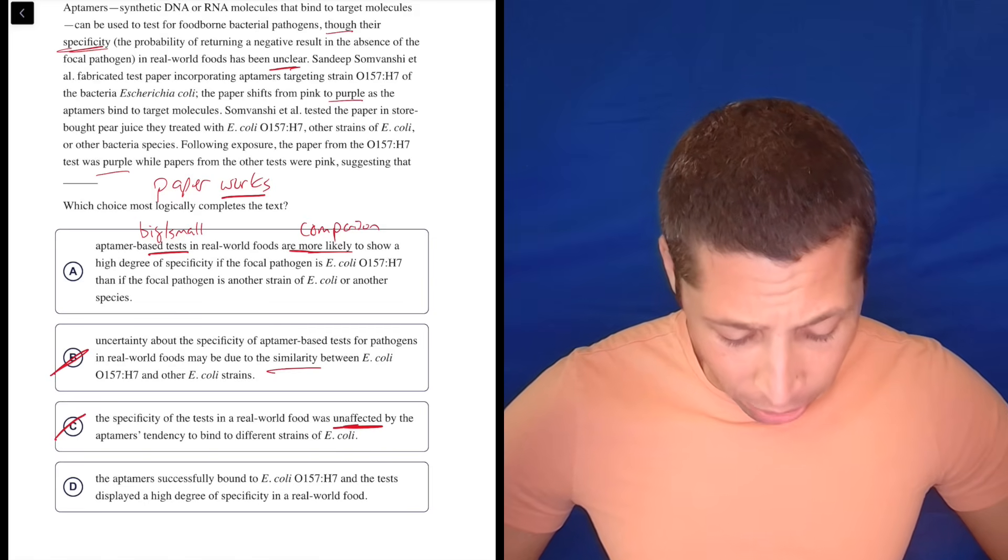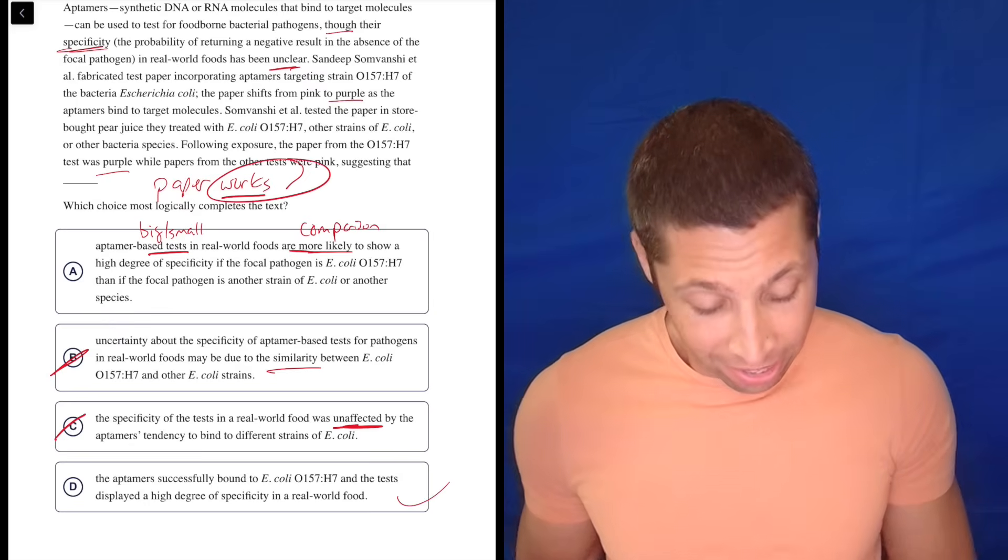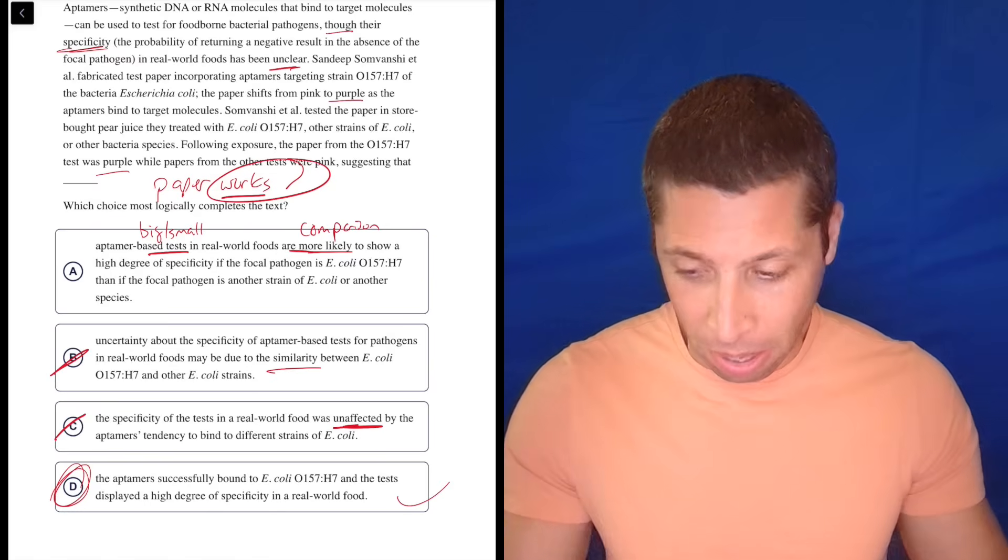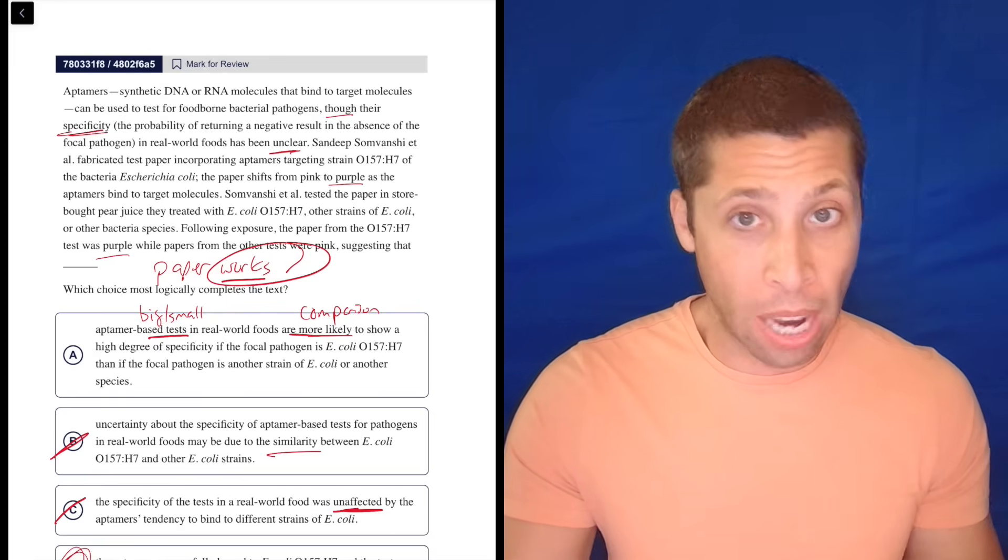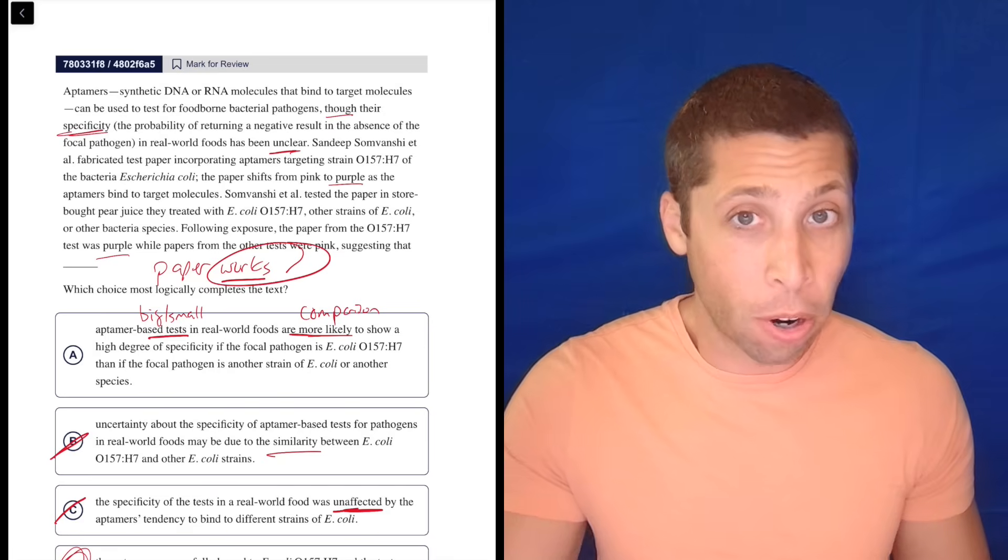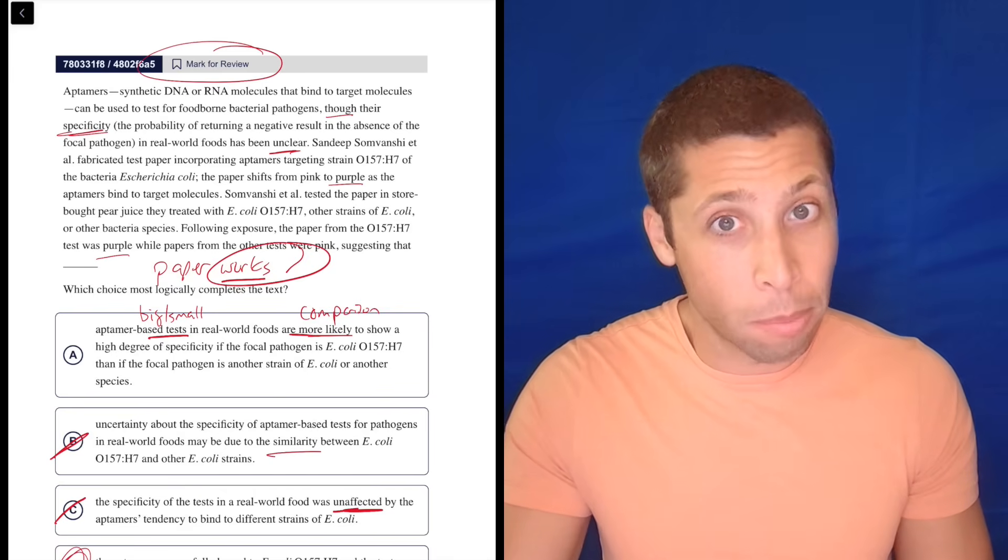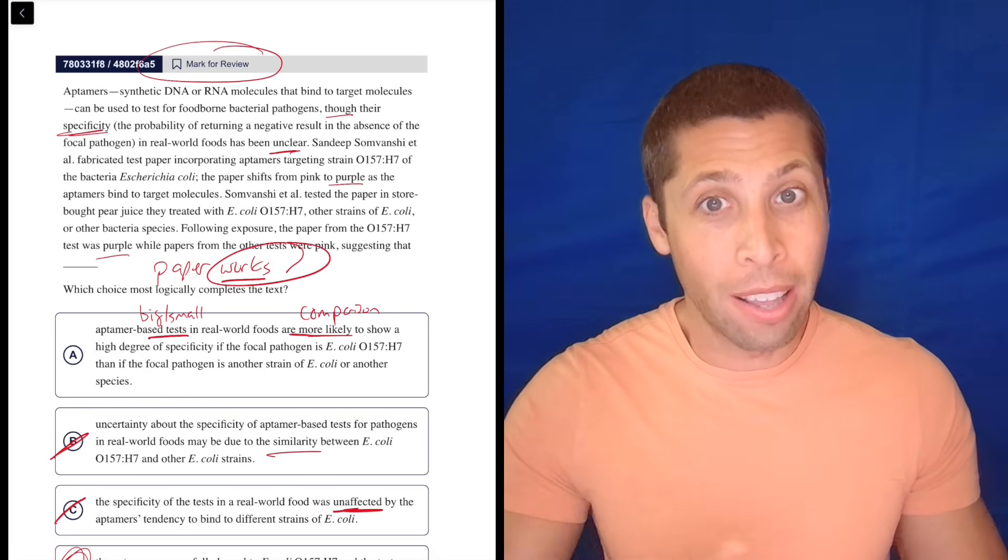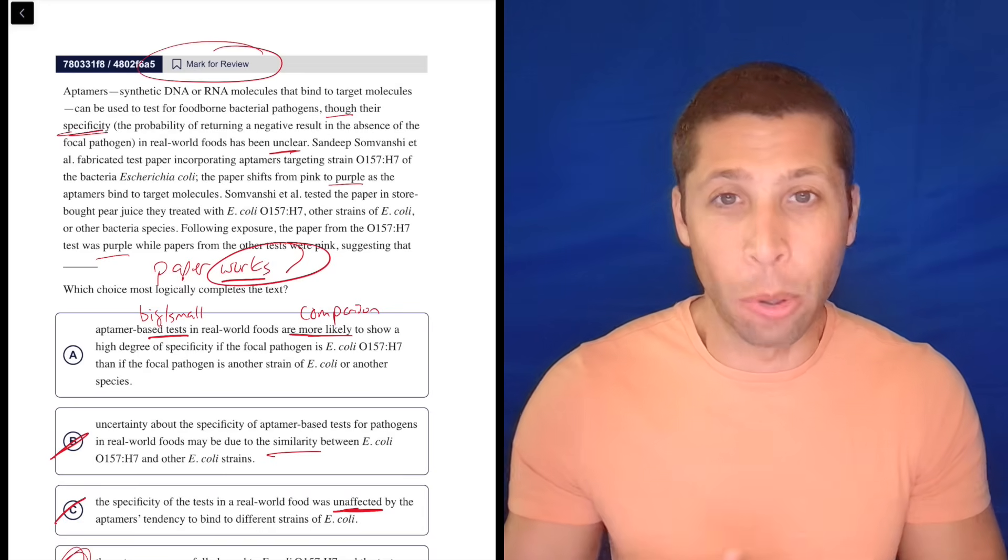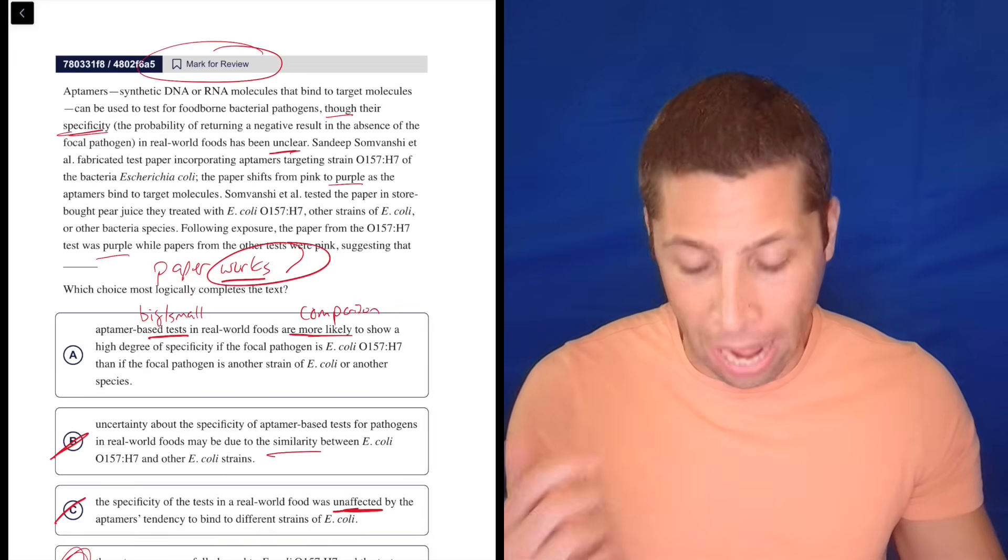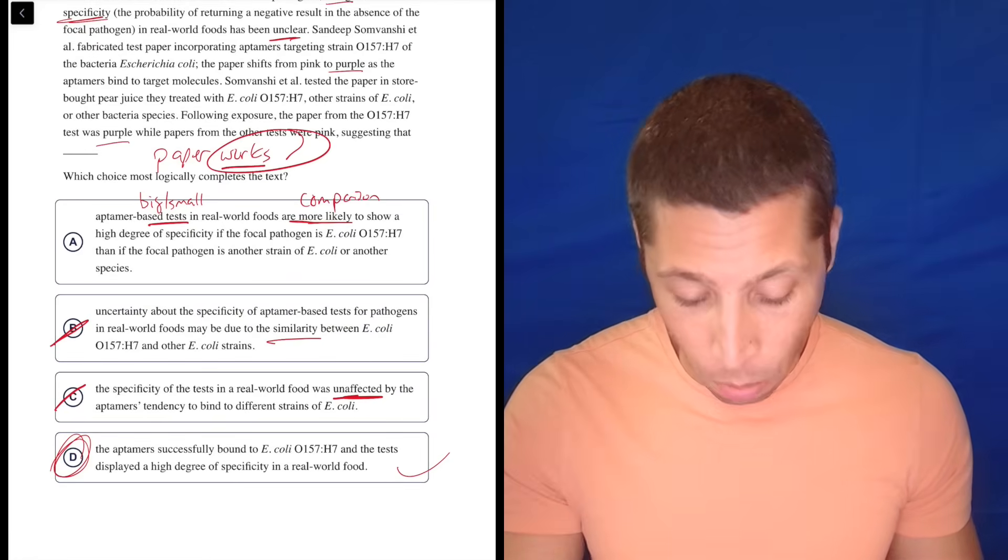Let's go to D. The aptamer successfully bound to E. coli O157 and the test displayed a high degree of specificity. Yeah, it worked. I don't know. This feels like the answer here just because my dumb summary really matches with that. Maybe I'm missing something. This would be a great example where depending on how much time I have left, I'm going to make a different choice. If I am in the hard module and I know that I need to move fast, I'm going to bookmark this thing and say, all right, I felt pretty good about that dumb summary and my understanding of the end of the passage. Let me just pick the choice that clearly seems to match it.